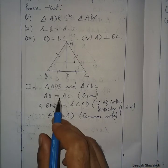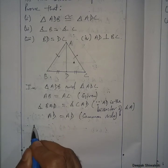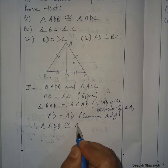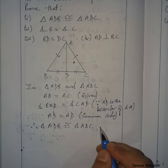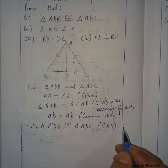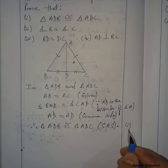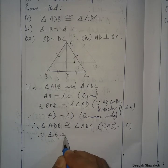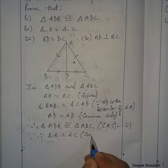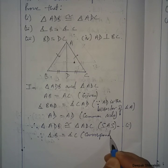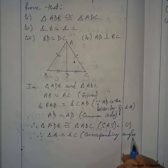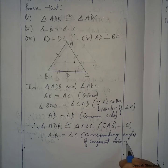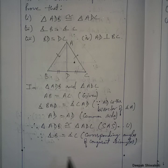Therefore, triangle ADB is congruent to triangle ADC by the Side-Angle-Side condition. This is number one. For number two: angle B equals angle C, because they are corresponding angles of congruent triangles.